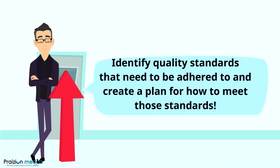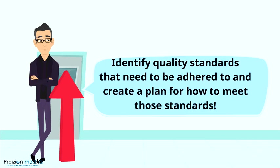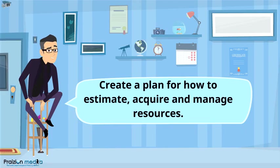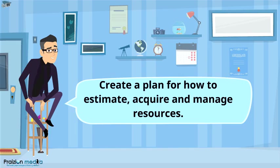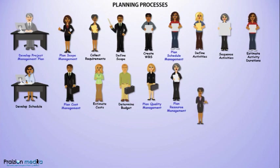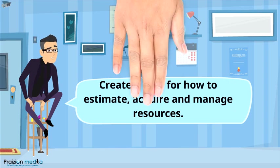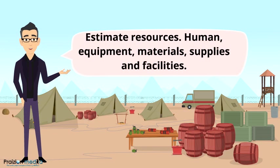The next process is Plan Quality Management, where we obtain a Quality Management Plan that defines the quality standards to be adhered to and a plan of action for meeting those targets. Moving to the Resource Management Knowledge Area, the first process is Plan Resource Management, producing a Resource Management Plan — a plan for how to estimate, acquire, develop, and manage human resources, as well as control physical resources. The next process is Estimate Activity Resources, where the resources needed — human, equipment, materials, supplies, and facilities — are estimated.